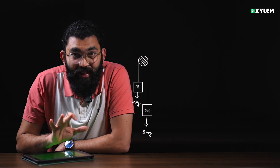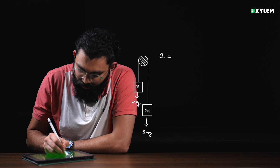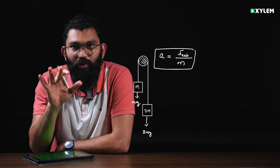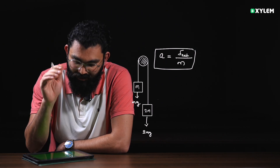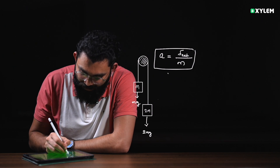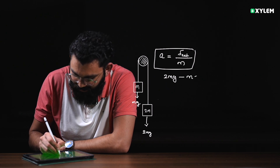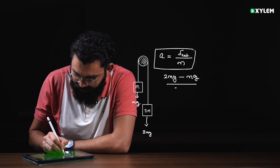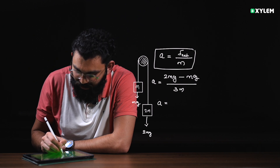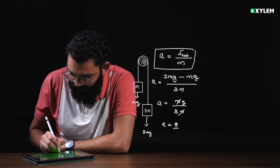If you look at the acceleration, you don't need a new equation. Acceleration equals net force divided by total mass — F equals ma, so A equals F divided by m. The net force: the weight of one body is 2mg acting downward, minus the opposing force mg, divided by total mass 3m. So acceleration equals 2mg minus mg, that is mg divided by 3m. The m cancels, giving acceleration equal to g by 3.